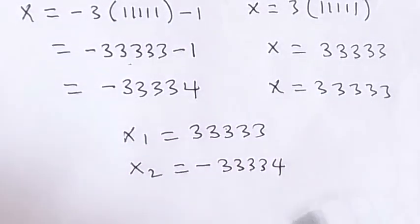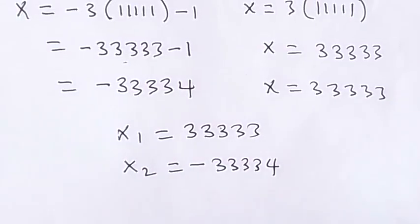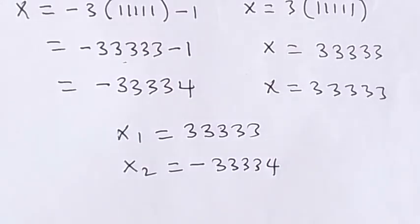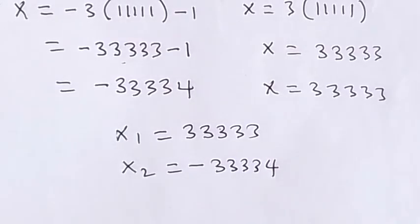So the values of x we got from this equation are x₁ equals 33333 and x₂ equals minus 33334. Thank you for watching — don't forget to subscribe to this channel for more videos. See you in the next class, bye for now.